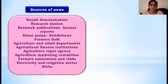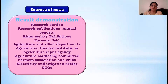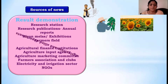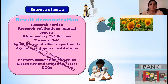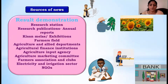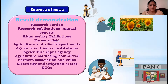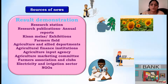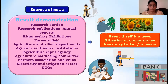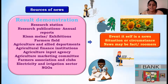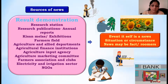Now we will see some of the important sources of news. These include result demonstrations, research stations, research publications such as annuals and periodicals, exhibitions, farmers' fields, agriculture and allied departments, agriculture financial institutions, development departments, input agencies, agriculture universities, KVKs, Marketing Committees, Farmers Associations and clubs, and sometimes electricity, irrigation, and NGOs. These act as sources of news. From all these areas we get information. But sometimes the event itself can become a news story, or a situation or circumstance may act as news - which may be a fact or sometimes a rumor.